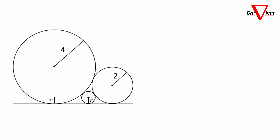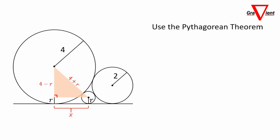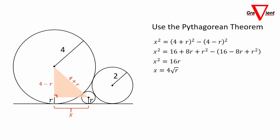First, connect the center point of the circle of radius 4 to the circle of radius R. Make a right triangle with base X. The hypotenuse is 4 plus R, and the other side is 4 minus R. With the Pythagorean theorem, X squared equals (4 plus R) squared minus (4 minus R) squared. With a little algebra, we get X equals 4 times the square root of R.